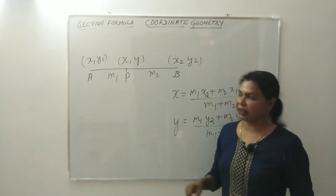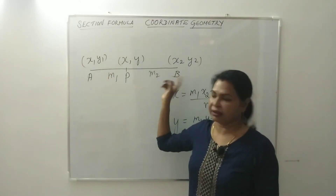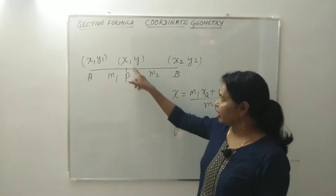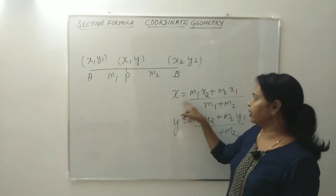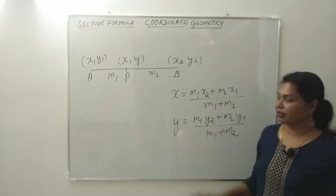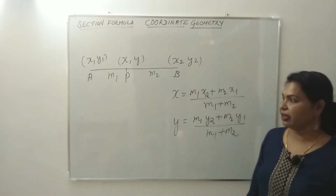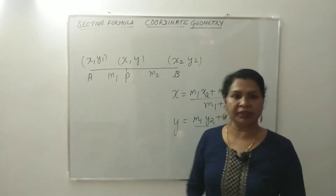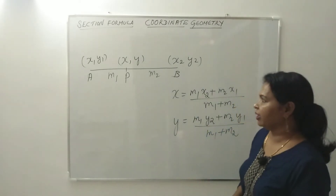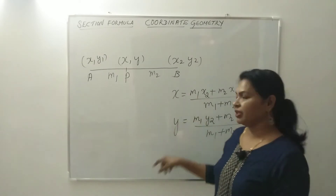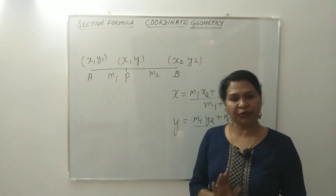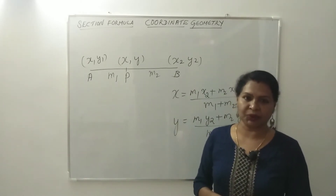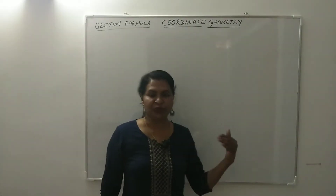P divides a line segment internally in the ratio M1 is to M2 with the coordinates X, Y. Then you can calculate the coordinate using this formula: M1·X2 plus M2·X1. And the Y coordinate formula is used similarly. This M1 to M2 — you can also write M to N. The textbook uses M1, M2. This formula is derived from M1 — just for information, that is not the answer required in the exam. Section formula derivation: